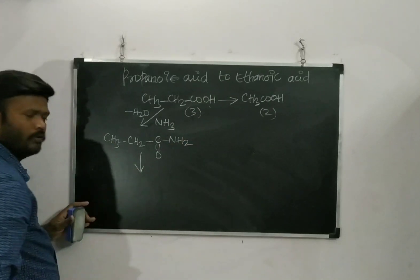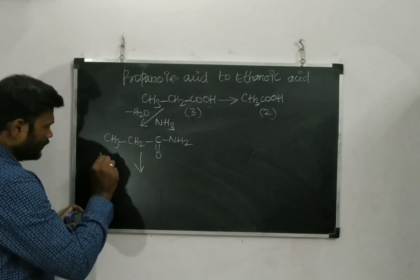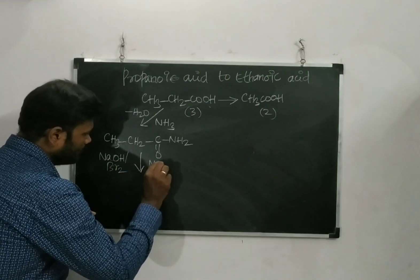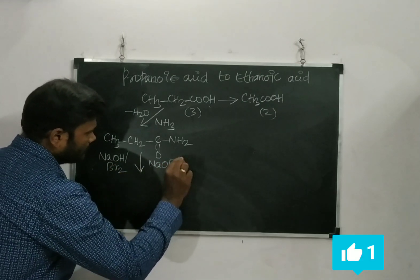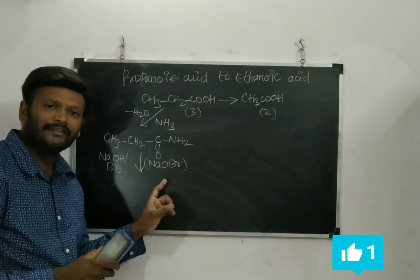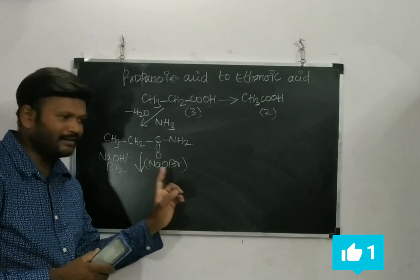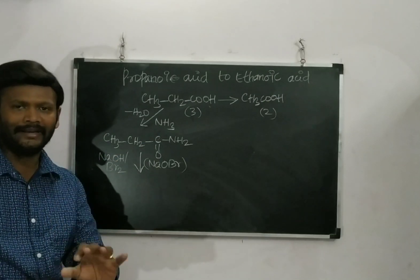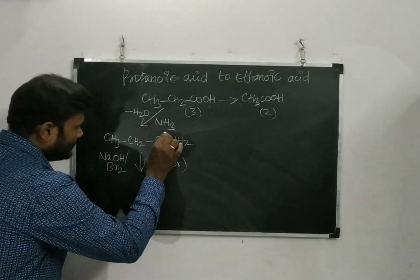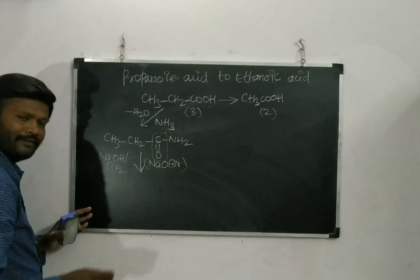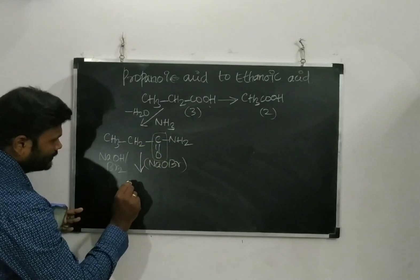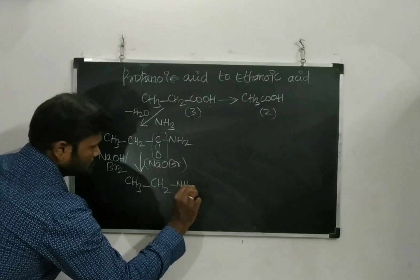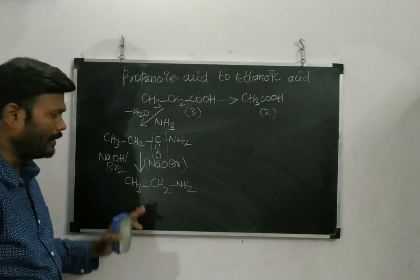Once I got the amide, I can reduce the number of carbon atoms using NaOH with Br2 — otherwise written as NaOBr — which is the Hoffmann Bromamide Degradation reagent. The rule of Hoffmann Bromamide Degradation is that it removes the CO group. So I will be getting CH3, CH2, NH2 — that is an amine.